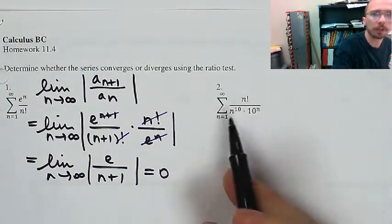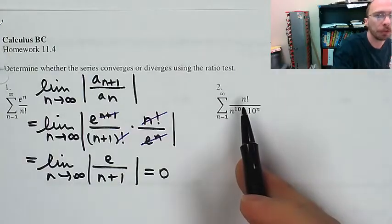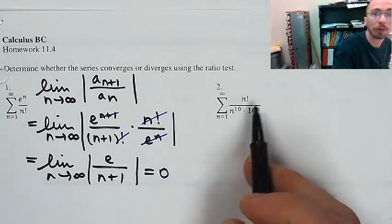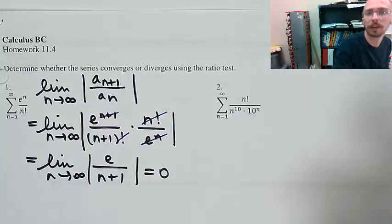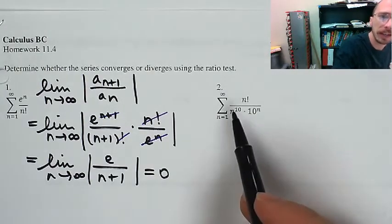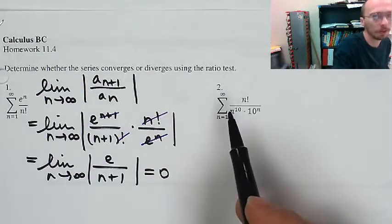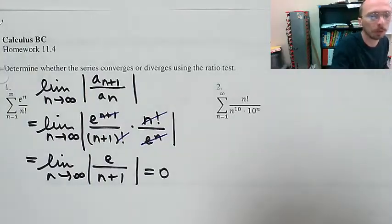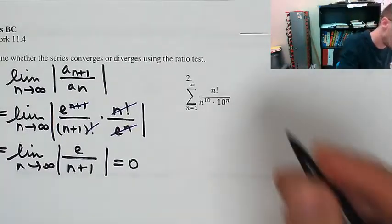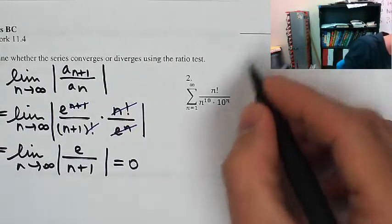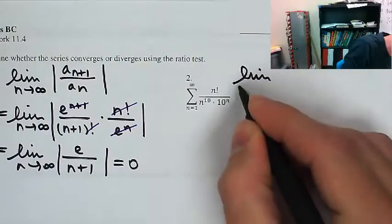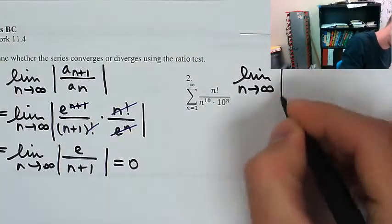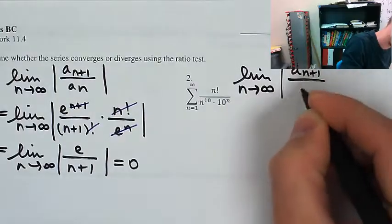This is an interesting test. I showed you in class that if it's n factorial divided by any number to the n, that's going to diverge. But is n to the 10th tacked onto the denominator enough to overcome this n factorial? I don't think it is, but I'm going to do the ratio test, which is going to start by me announcing that I'm interested in taking the limit of the ratio of successive terms.